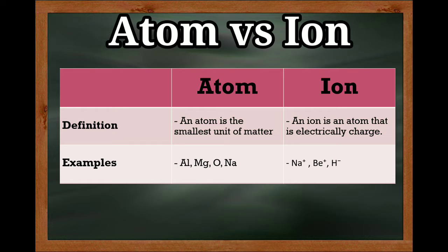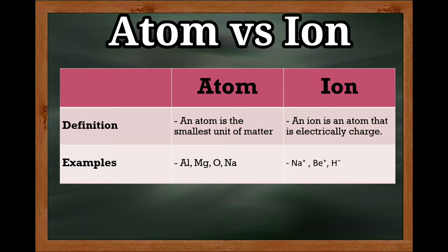These are examples of atoms: aluminum atom, magnesium atom, oxygen atom, and sodium atom. Examples of ions are: positive sodium ion, positive helium ion, and negative hydrogen ion.